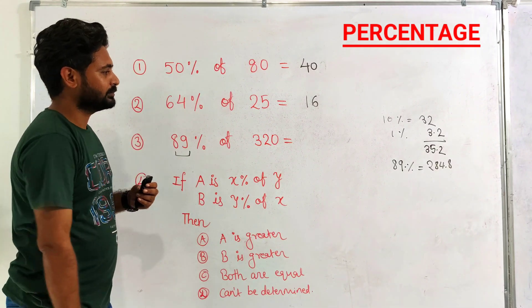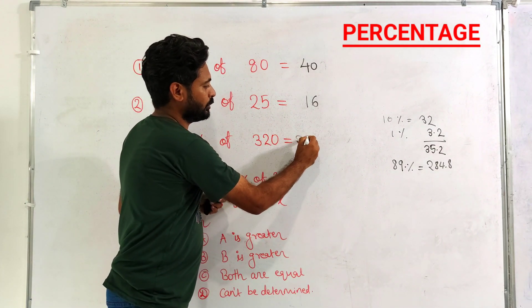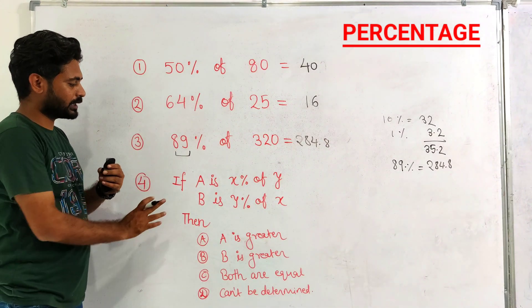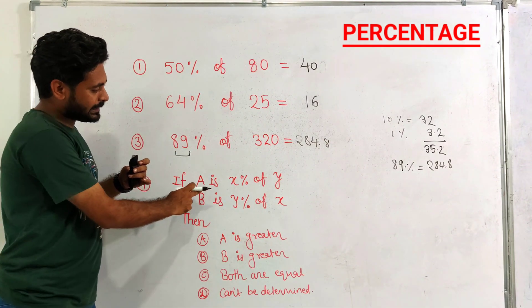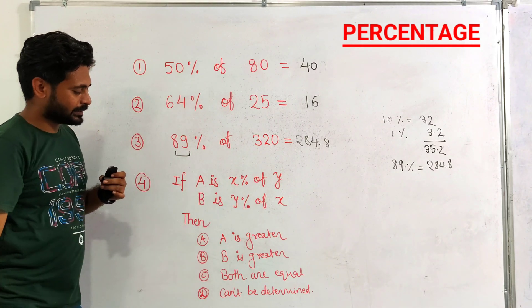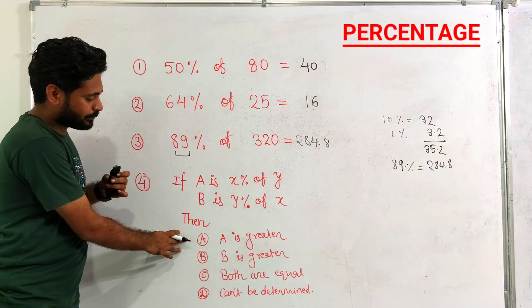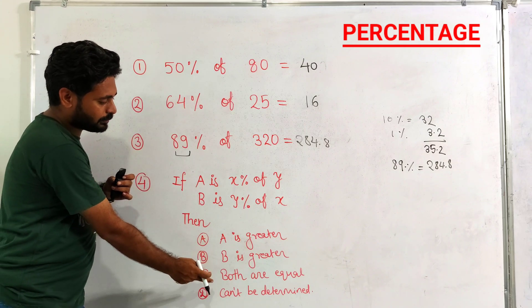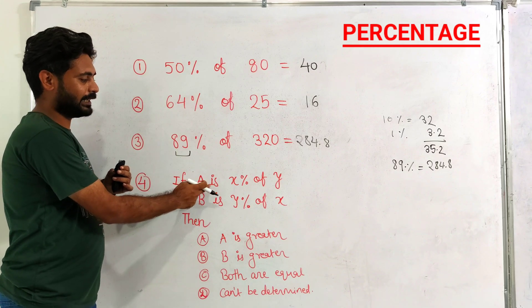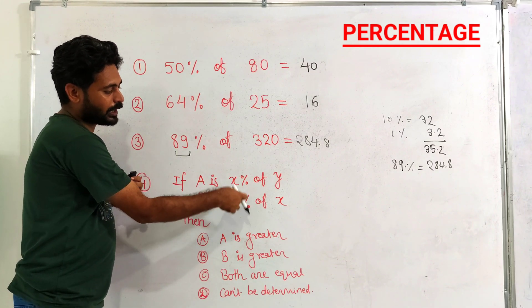Now we have one last question. If A is x percent of y and B is y percent of x, then which condition is correct? A is greater, B is greater, both are equal, or cannot be determined. Now it's quite simple. A is x percent of y and B is y percent of x. This means both are same.